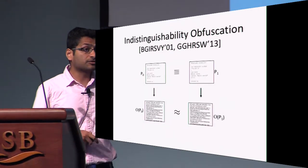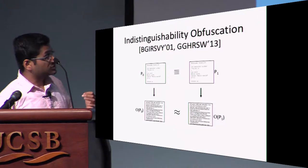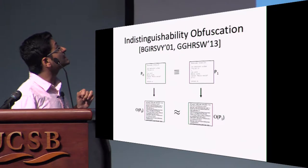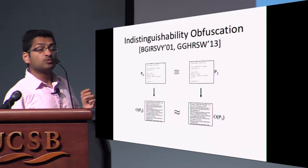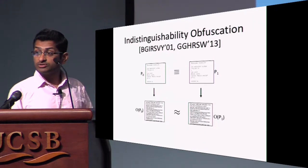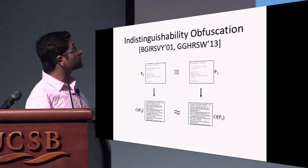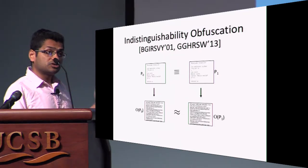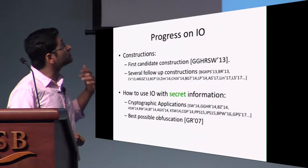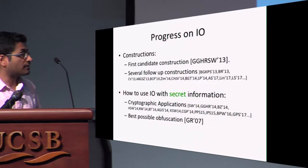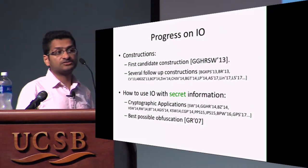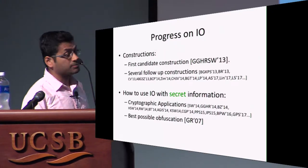An alternative, weaker notion of security which is very commonly used is the indistinguishability obfuscation notion. What this notion says is that if you have two programs P0 and P1, which are functionally equivalent — meaning on every input the two programs output the same exact output — then if you were to obfuscate one of the two programs, the distributions of the obfuscations are computationally indistinguishable. This notion has recently gained a lot of popularity, and we have general-purpose constructions of obfuscation satisfying this security notion, at least plausible candidates.